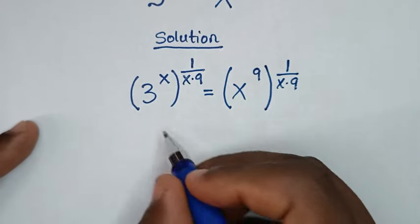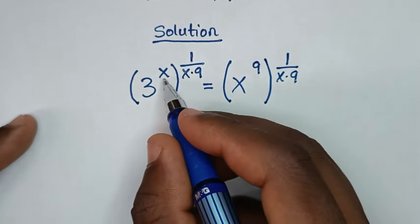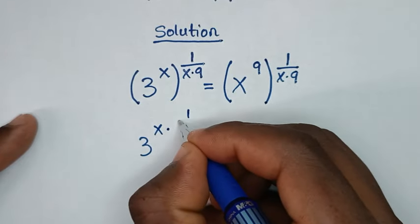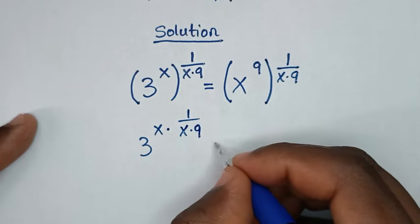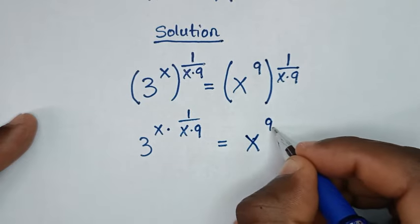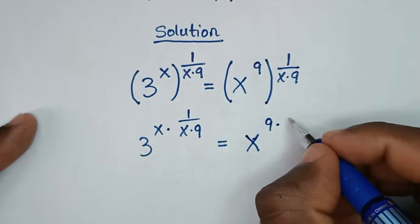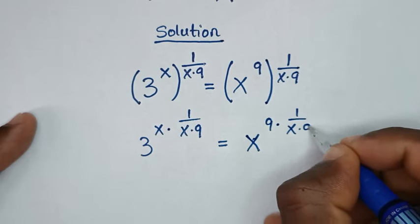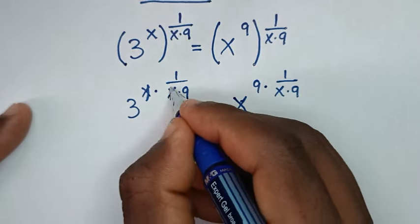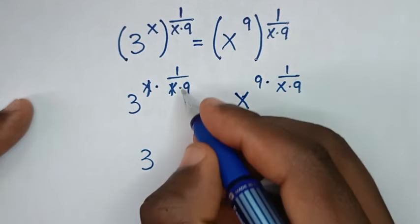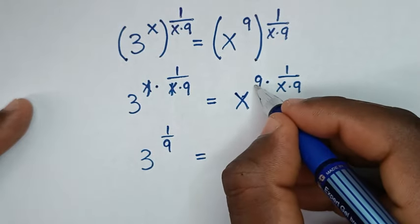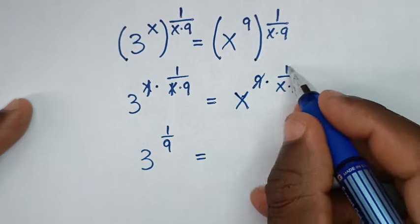Then in the next step, we open these brackets. So it will be 3 power of x, times this power of 1 over x times 9, is equal to x power of 9 times this power of 1 over x times 9. Then to simplify, this x and this x will cancel. So it will be 3 power of 1 over 9 is equal to, and this 9 and 9 will cancel, so it will be x power of 1 over x.